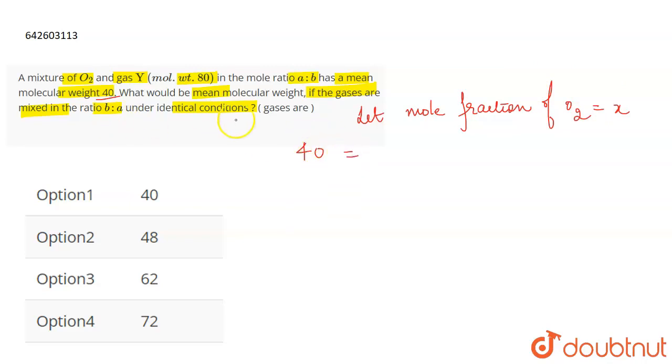So the mean molecular weight, or the molecular weight of the mixture, is equal to 40. That will be equal to molar mass of oxygen into its mole fraction plus molar mass of Y into its mole fraction which will be 1 minus X. So when we solve this, we will get the value of X equal to 5 by 6.